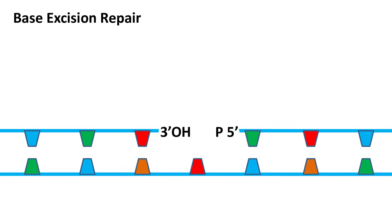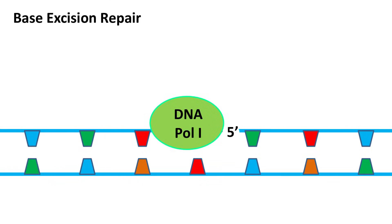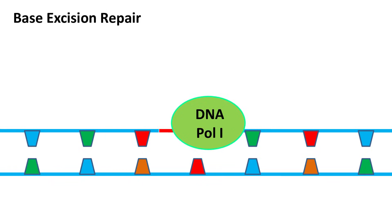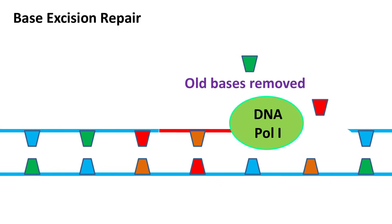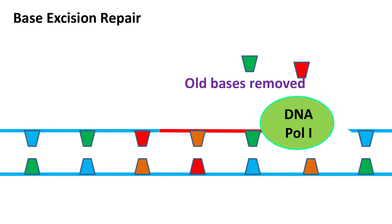The DNA polymerase then identifies the 3'-hydroxyl group and adds correct bases in the 5' to 3' direction. During this step, the DNA polymerase also carries out 5' to 3' exonuclease activity to remove the old bases.